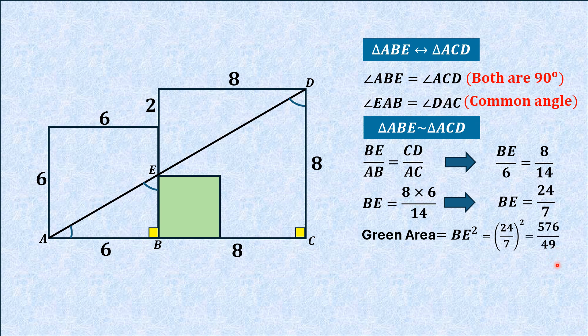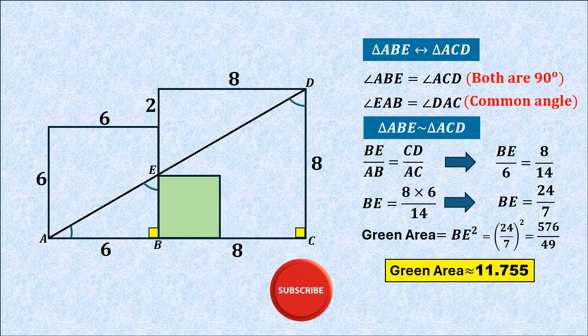This simplifies to 576/49. Using a calculator, the green shaded area equals 11.755 square units. That is the answer. Thank you for watching.